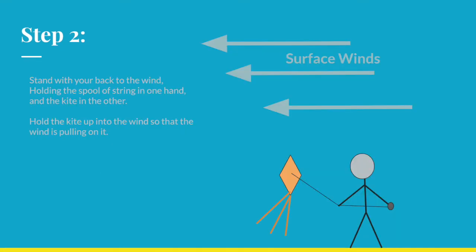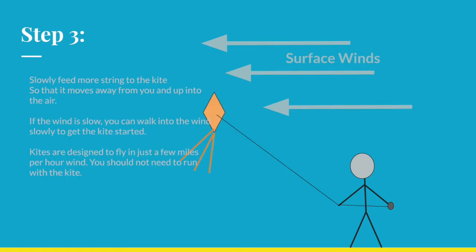When you want to go fly your kite, stand with your back to the wind and hold the spool in one hand and the kite in the other. The wind should be pushing on the front of your kite. With your back to the wind, slowly feed more string to the kite as it moves away from you and up in the air. If the wind is slow, you can walk backwards to simulate more wind speed. However, you shouldn't need to run with your kite because most kites can fly with just a few miles per hour wind.